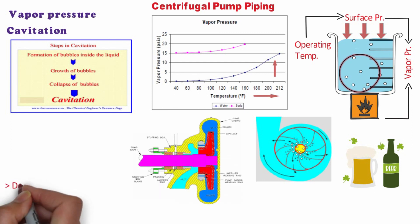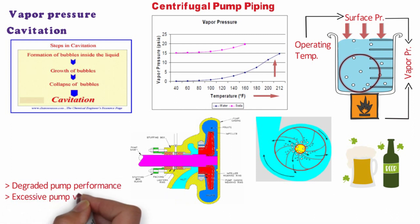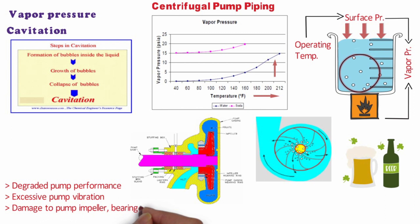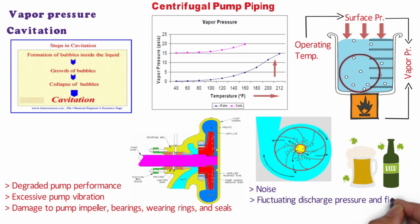There are several effects of cavitation on a pump: it degrades pump performance, causes excessive pump vibration, and damages the pump impeller, bearings, wearing rings, and seals. There are three indications that a pump is experiencing cavitation: noise — a cavitating pump can sound like a can of marbles being shaken; fluctuating discharge pressure and flow; and fluctuating pump motor current.